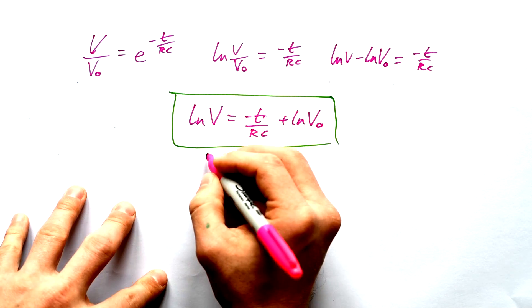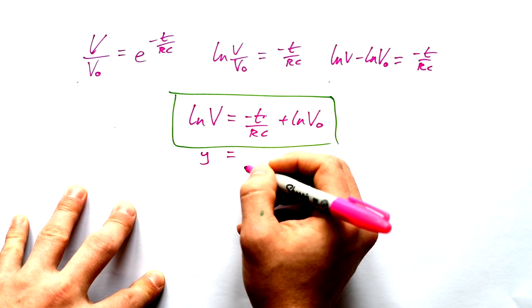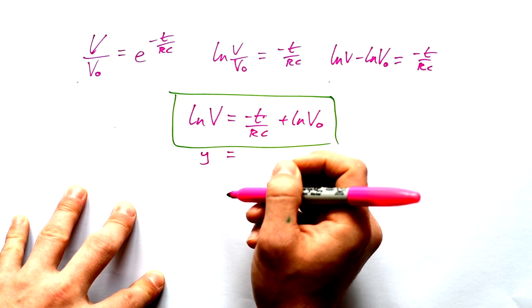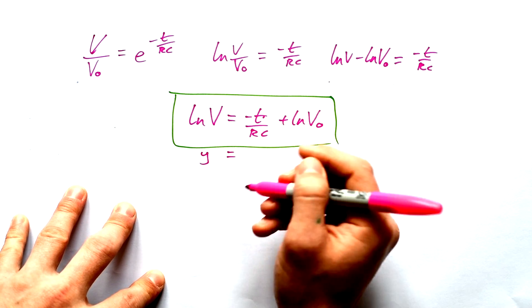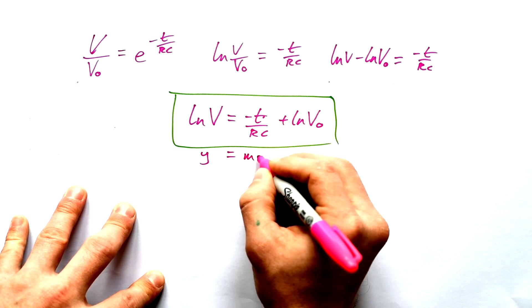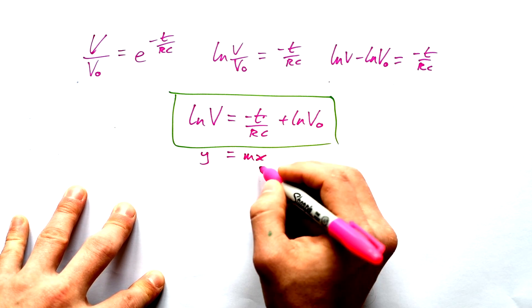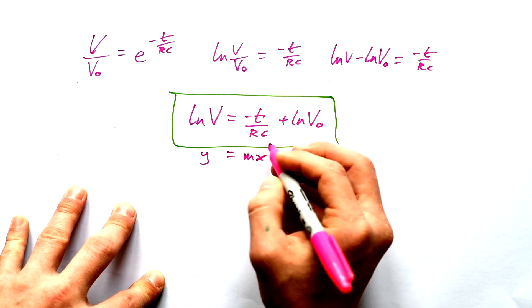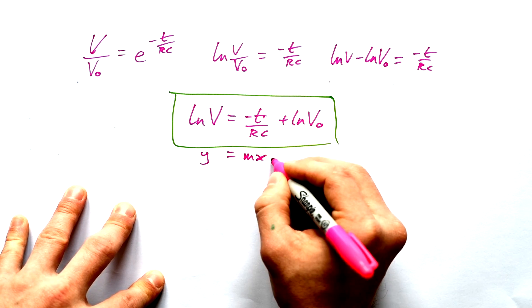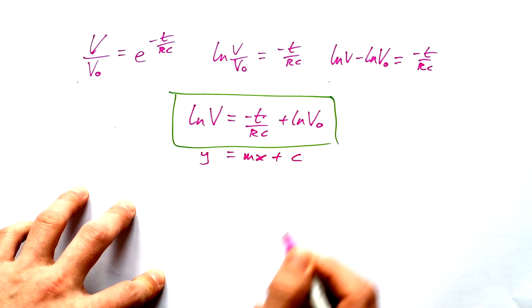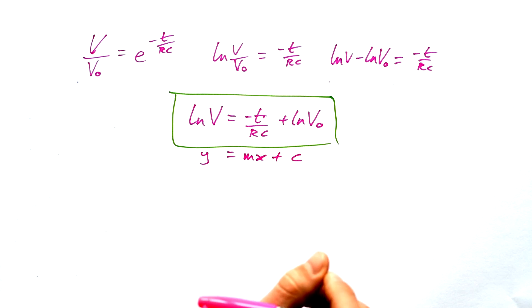And so we can see that this gives us a straight line graph. Log of V can be on a y-axis. Yes, I can say log. Some people say ln, but it is just a log. It's just not base 10. And that gives us mx, where time is our x. And we can see what our gradient is going to be as well. And so log of V0 is going to be our y-intercept.